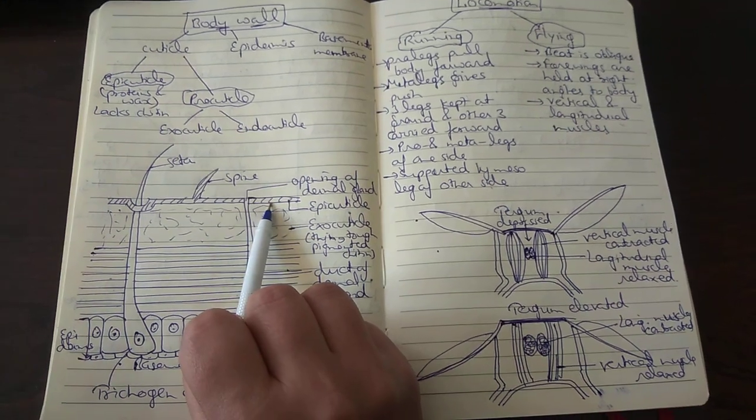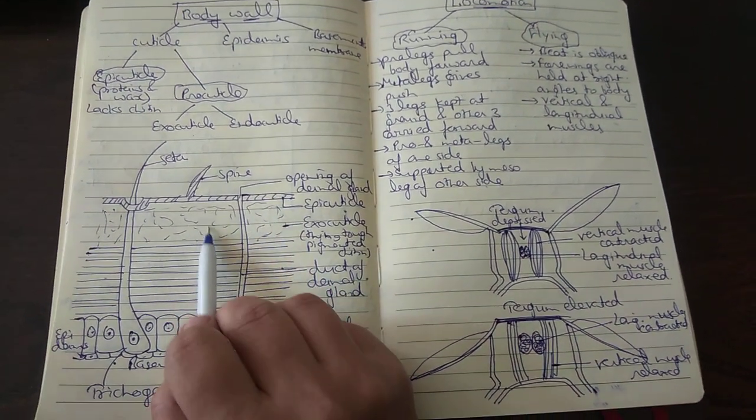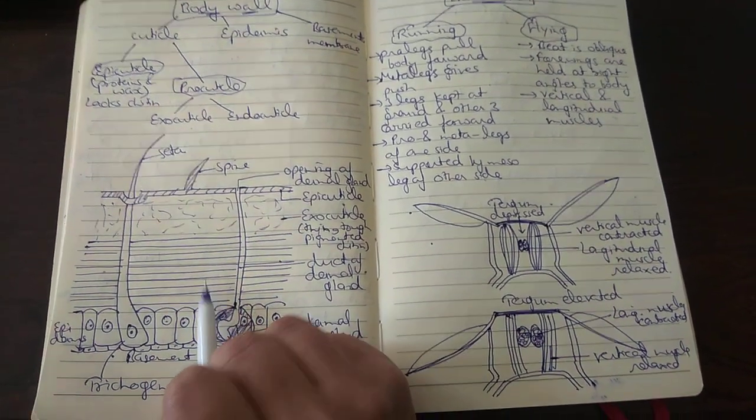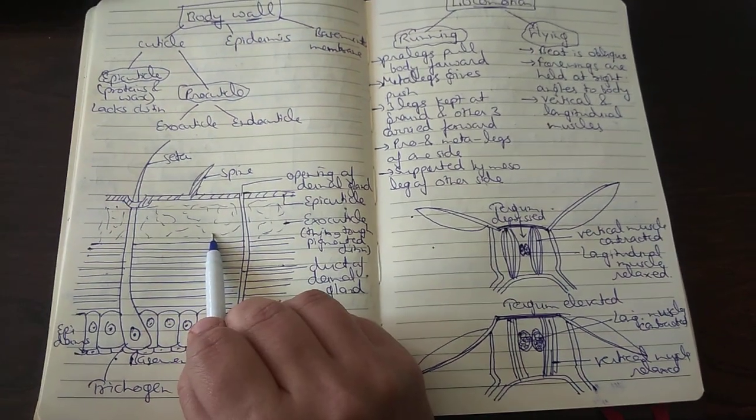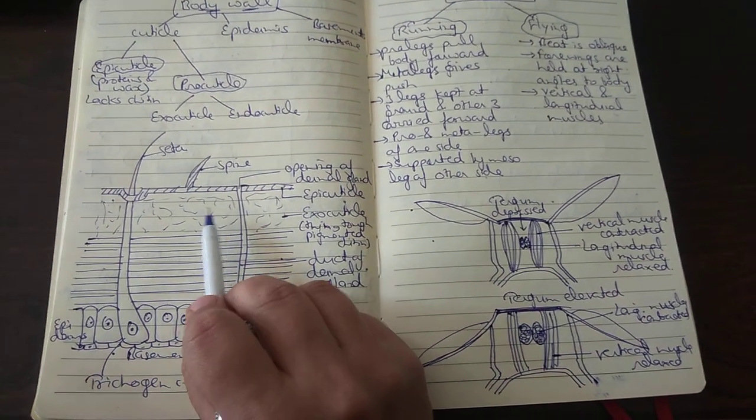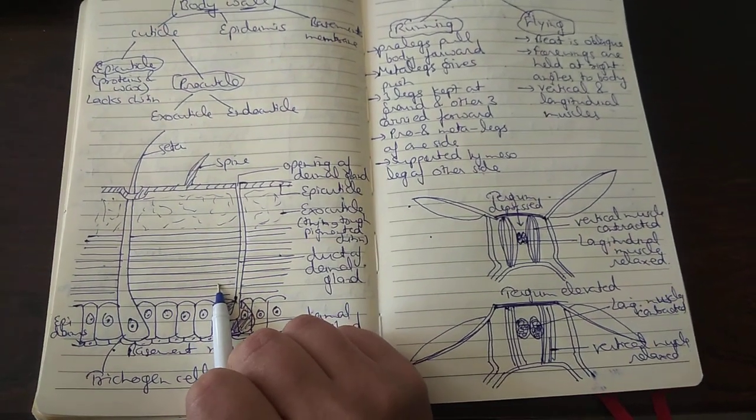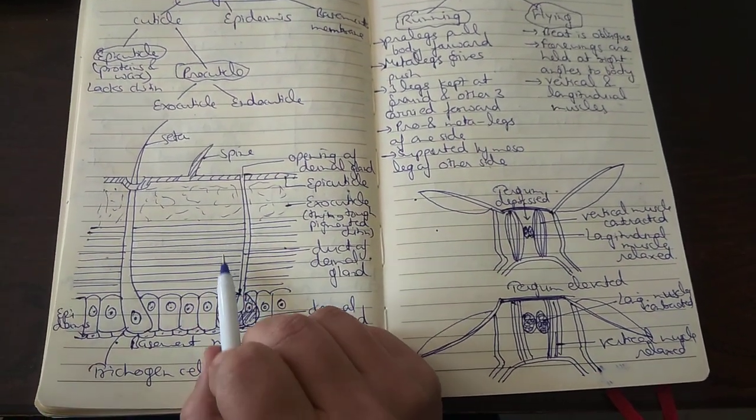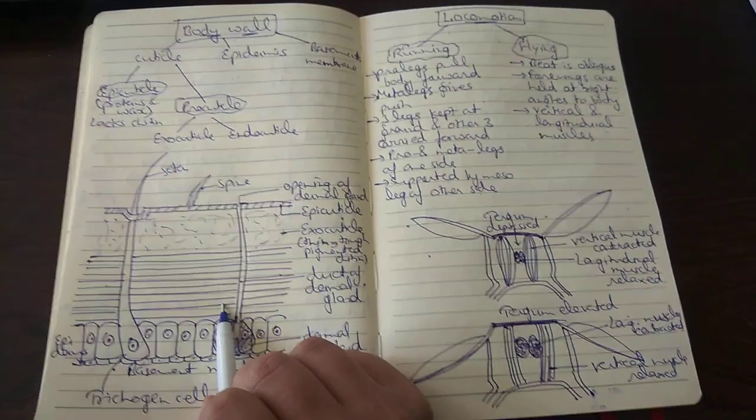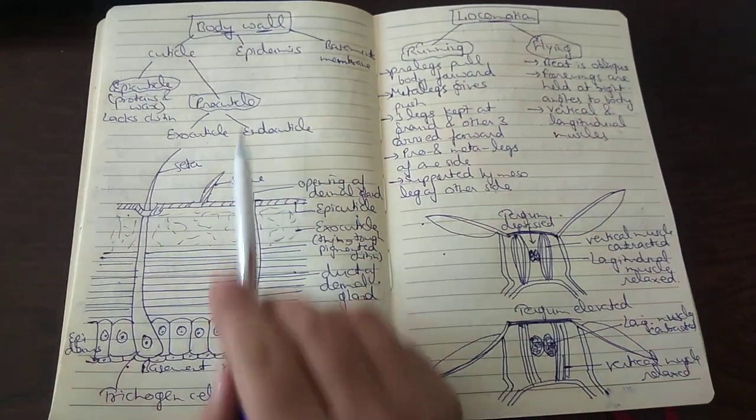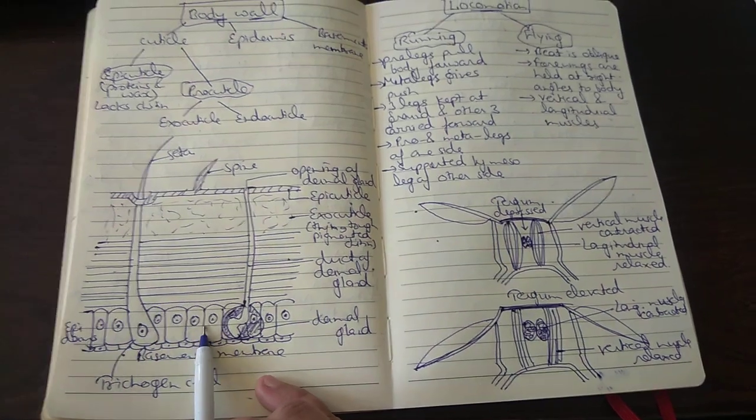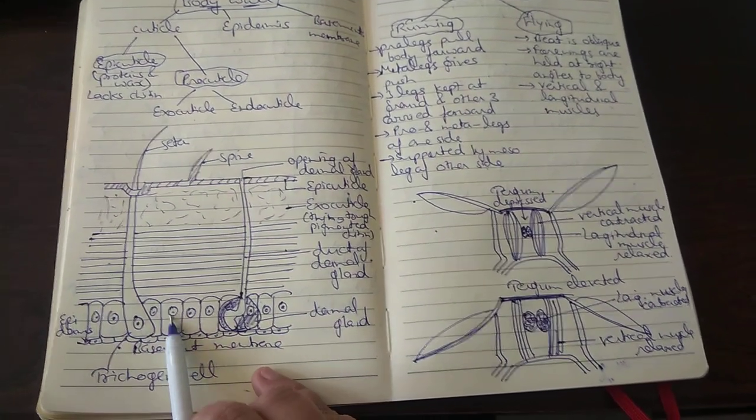Then comes the procuticle, which has the outer thin, tough, pigmented chitin layer called the exoskeleton, and the inner thicker layer which is soft compared to the exocuticle and is referred to as the endocuticle. Then comes the epidermis.